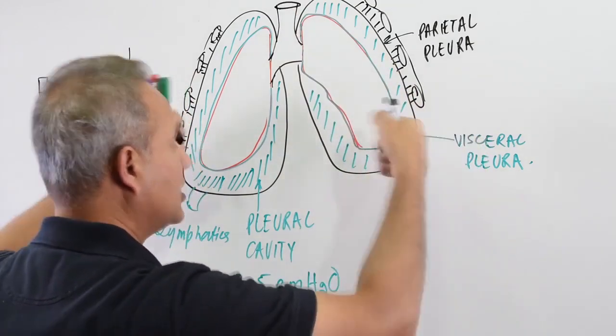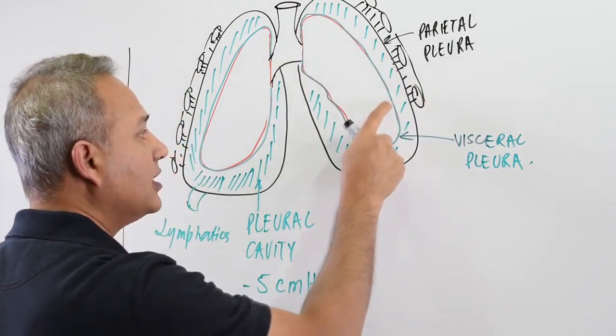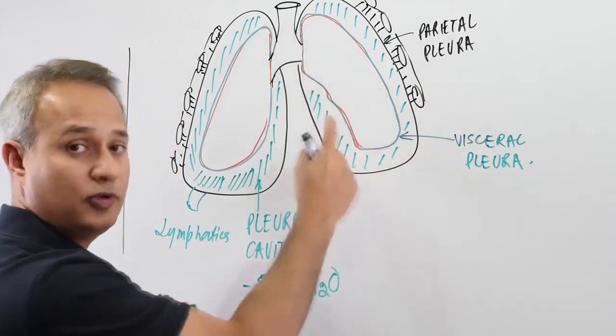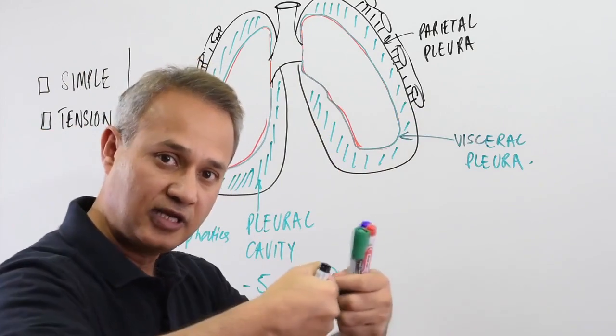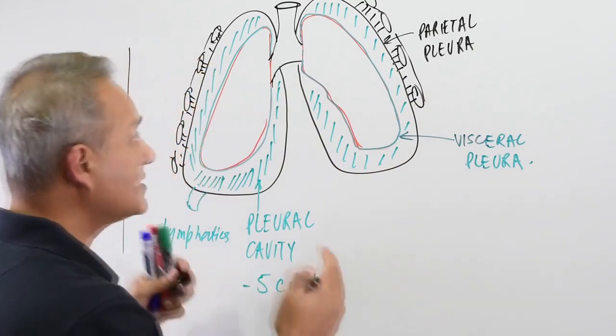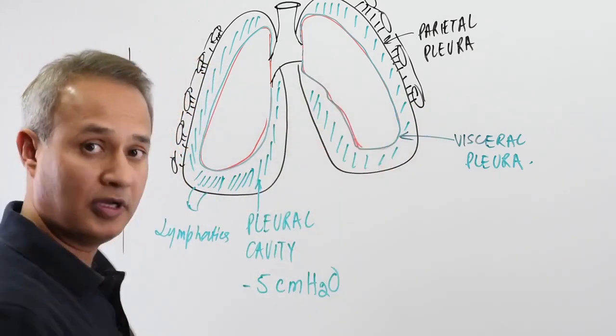Fluid is then causing a suction effect on the visceral pleura. Visceral pleura is tightly bound to the lungs, so the lungs are pulled out. That is how the outward pull happens and that is why there is minus 5 centimeters of water pressure.